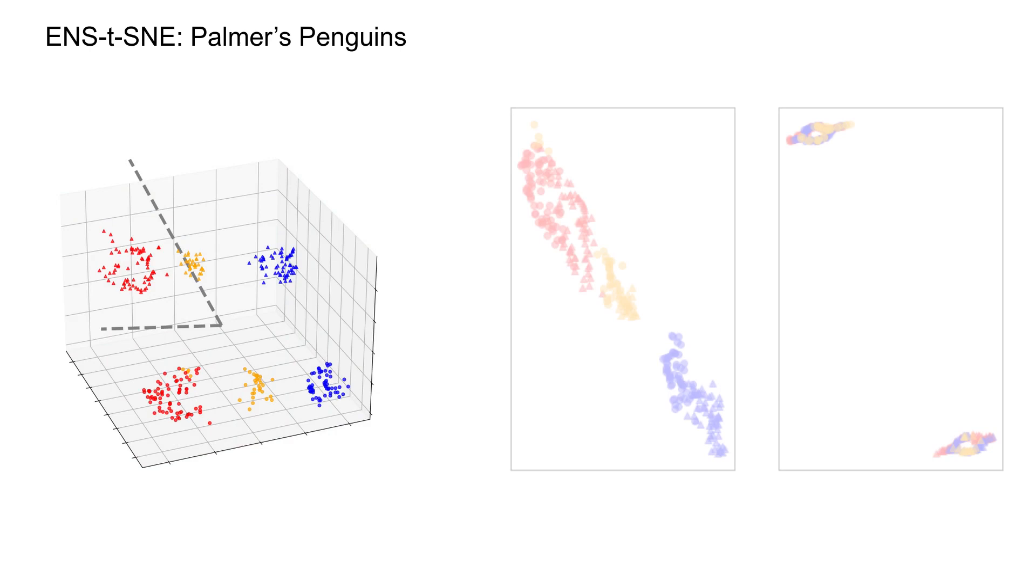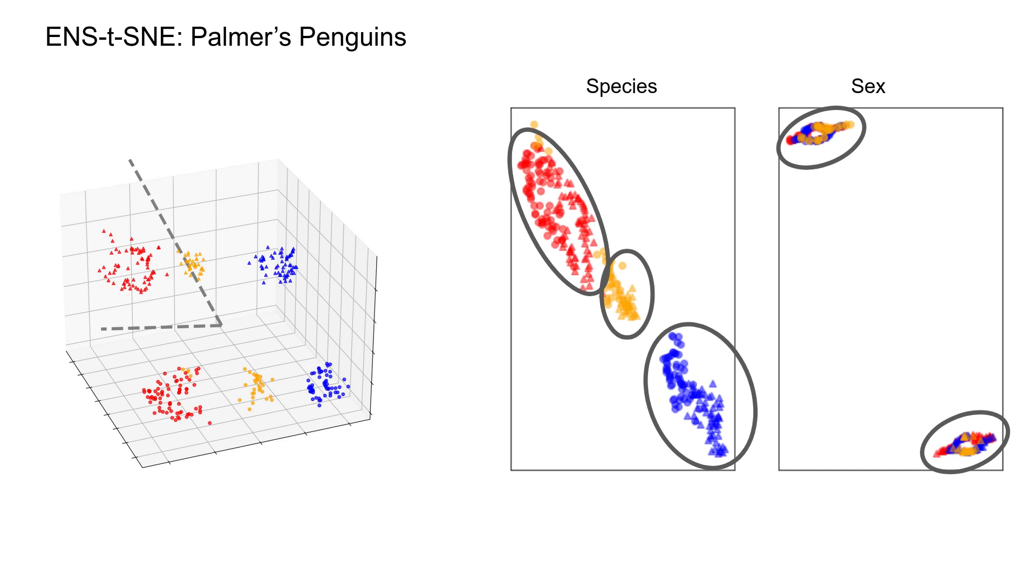To show each viewpoint statically, we can apply the projections to produce two-dimensional small multiple plots. In the first view, we have used the physical attributes to capture penguin species, and in the second view, we have used the penguin's gender attribute to capture penguin's gender.